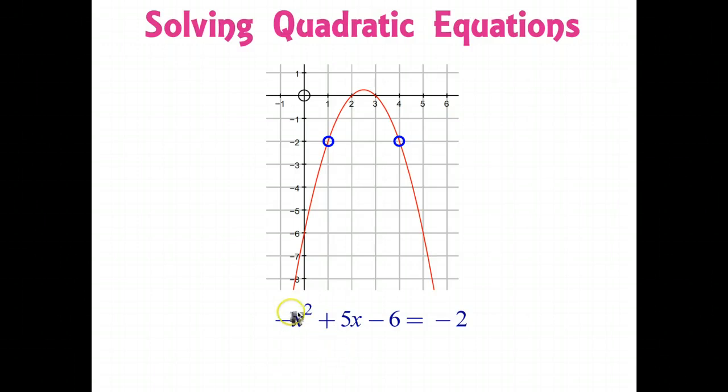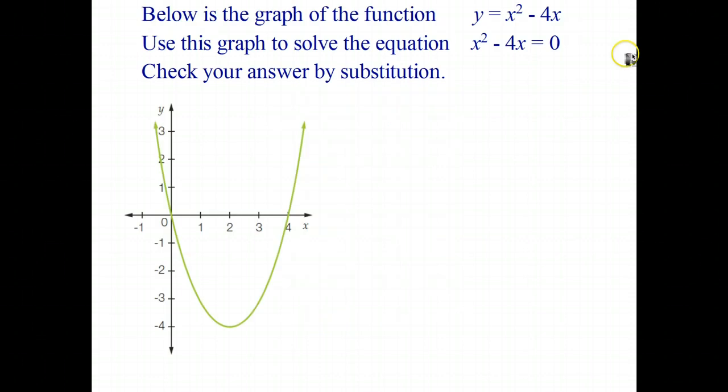If you look here on the left hand side of the equal sign is a quadratic expression negative x squared plus 5x minus 6 and we're trying to find out for what values of x does that expression equal negative 2. It turns out there's a number of ways to solve equations like this and the one that we're going to start with is solving them graphically.